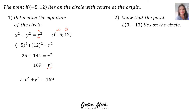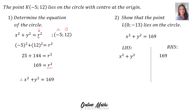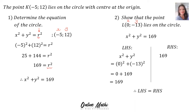Question 2: Show that the point L(0, −13) lies on the circle. When you want to show that a point lies on a circle, you use the formula and show that the left-hand side equals the right-hand side. The left-hand side is x² + y², and the right-hand side is 169. Substituting x = 0 and y = −13: 0² + (−13)² = 0 + 169 = 169. The left-hand side equals the right-hand side, therefore point L lies on the circle.